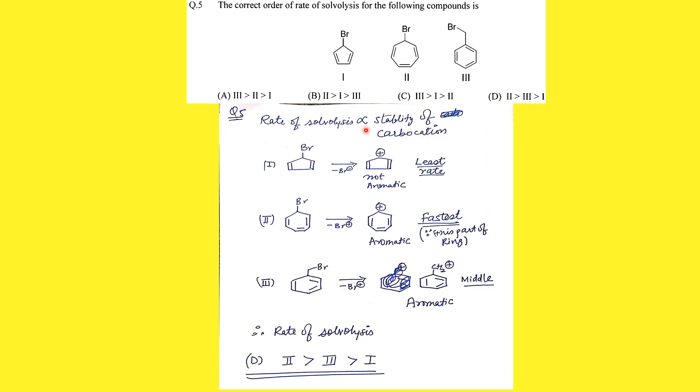The next question asks about the correct rate of solvolysis for the given compounds. The rate of solvolysis is directly proportional to the stability of the carbocation generated. When the carbocation is generated at one position it is non-aromatic, making it the least stable, so the rate of solvolysis is least in that case. The propargylic carbocation is more stable compared to the benzylic carbocation because the positive charge is part of a ring, giving a rate order of 3 > 2 > 1.